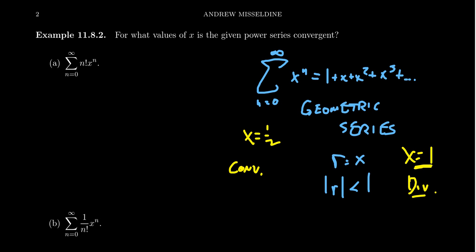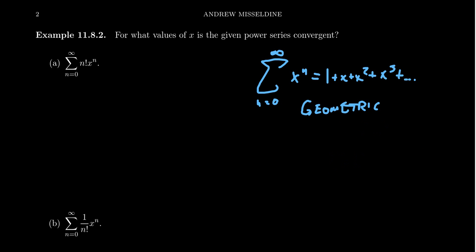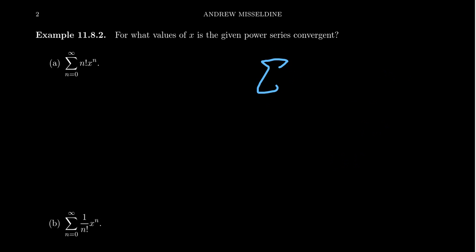Given a power series with a specific coefficient sequence, we ask ourselves: what values of X make it converge? What's the domain of a power series? The domain of a function is every choice of X that makes the function evaluate to a real number. For a power series to satisfy that condition, we need it to be convergent. So when we ask for what values of X the given power series converges, we're really asking for the domain of that power series.